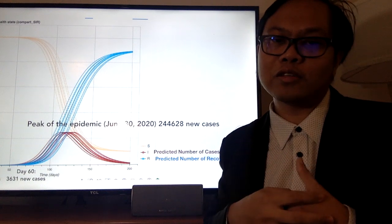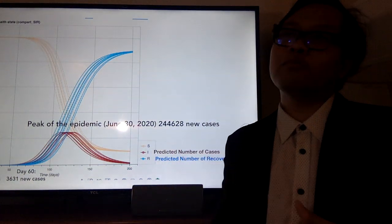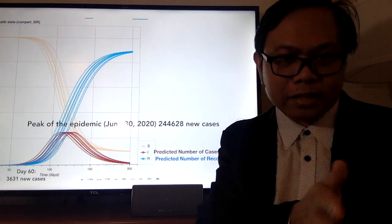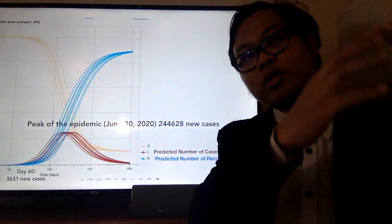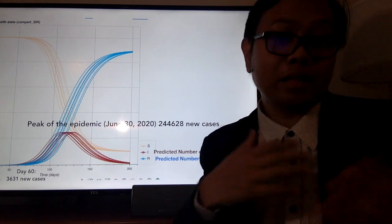Isa yun sa mga tinatanong sa akin, ano yung assumption ng model? Ang assumption ng ginawa kong model is, based sa current trajectory, sa current reproductive number. Kasi reproductive number, pwedeng bumaba pa, depende yun sa intervention.